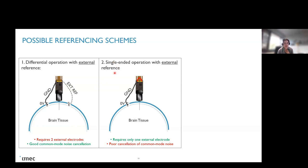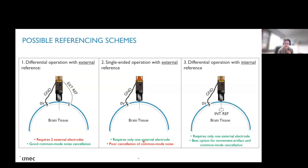Another, this is probably the most common technique that I know, where people are shorting in the probe flex itself, the reference and ground. In this case, they will get a single-ended operation. In this case, you only have one single external wire, but you will not have good cancellation of common mode noise.